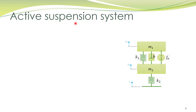The system considered previously is called a passive suspension system. In modern cars, we have active suspension systems. The difference is that a passive suspension system uses only passive elements — spring and damper — whereas an active suspension system includes an active element such as a linear motor or hydraulic actuator in addition to the passive elements. This actuator applies a controlled force on the vehicle body, and the force magnitude is controlled by a control algorithm to provide additional ride comfort.